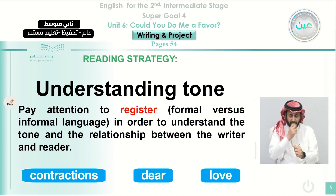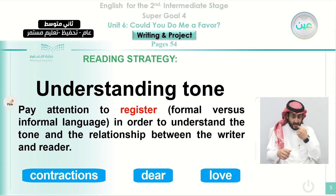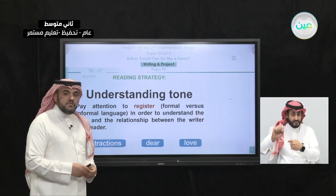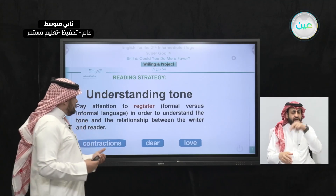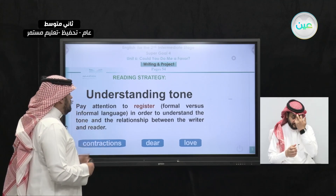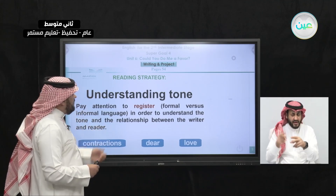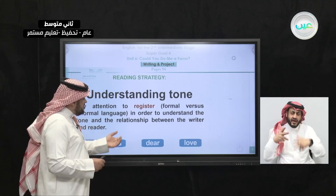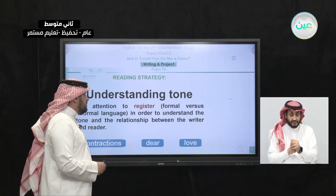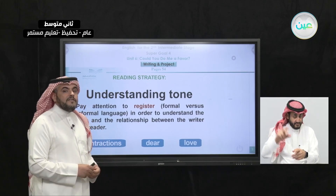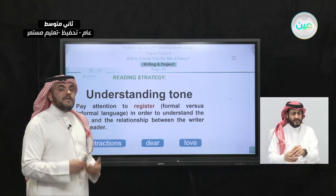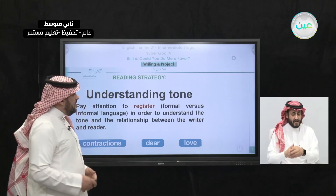How do you understand that? From something called the register. The register is the expressions and tone used in a reading. Sometimes you can find contractions, you can find some emotions reflected in expressions like 'dear' or 'love' — that is considered as informal writing.